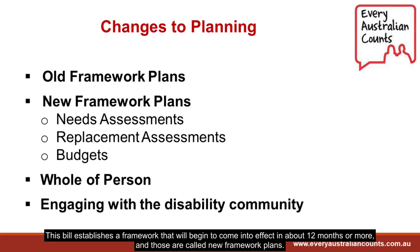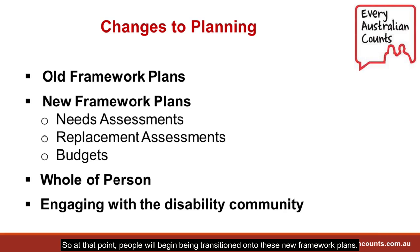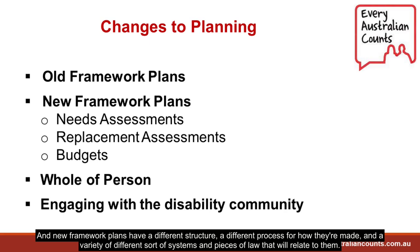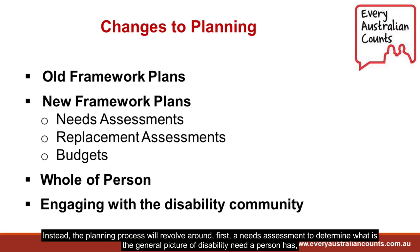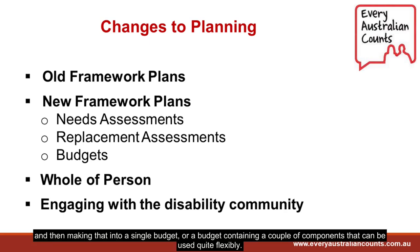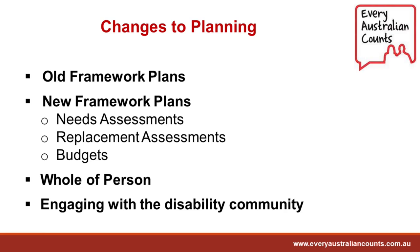Those are called new framework plans. At that point, people will begin being transitioned onto these new framework plans. New framework plans have a different structure, a different process for how they're made, and a variety of different systems and pieces of law that relate to them. For a new framework plan, it will no longer be what's called line-by-line planning, where the NDIA decision-maker decides do you get this support or that support. Instead, the planning process will revolve around first a needs assessment to determine the general picture of disability need a person has, and then making that into a single budget or a budget containing a couple of components that can be used quite flexibly.